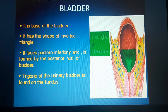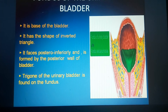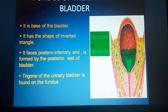Coming to the fundus of the urinary bladder — it is the base of the bladder, has the shape of an inverted triangle, faces posteriorly and inferiorly, and is formed by the posterior wall of the bladder. The trigone of the urinary bladder is found on the fundus.